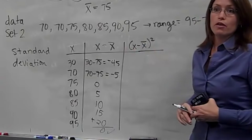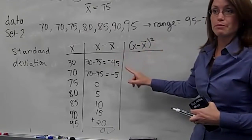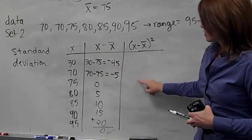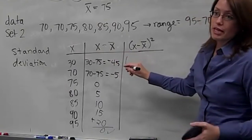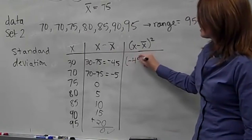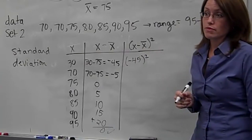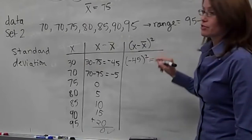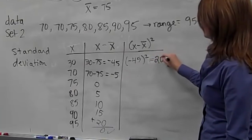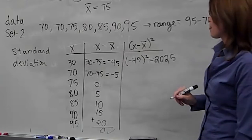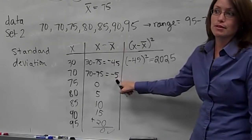Now in the next column, x minus x-bar squared: take the answer you had and square it or multiply it by itself. Every answer will be either zero or positive. You can type negative 45 times negative 45, or negative 45 squared, or just 45 squared — because you know it'll be positive anyway. 45 squared is 2025. Then 5 squared is 25; zero squared is zero.